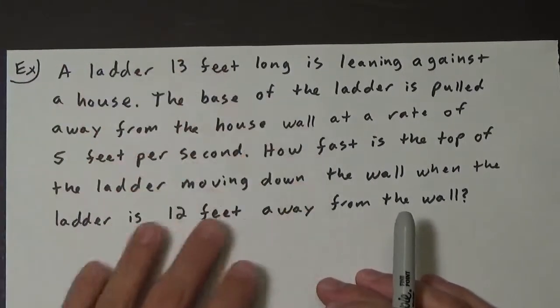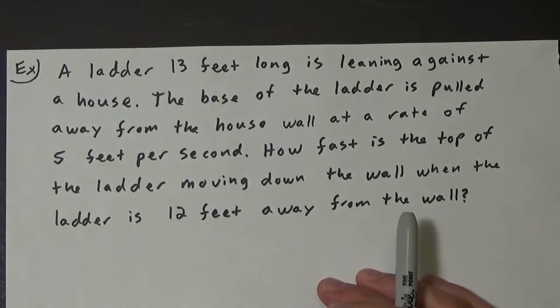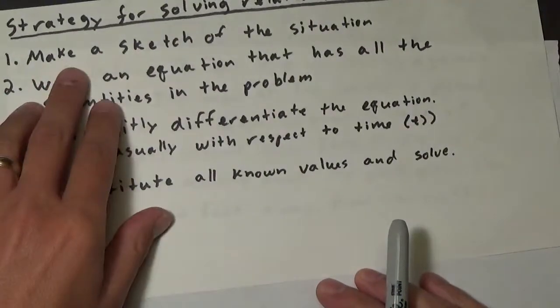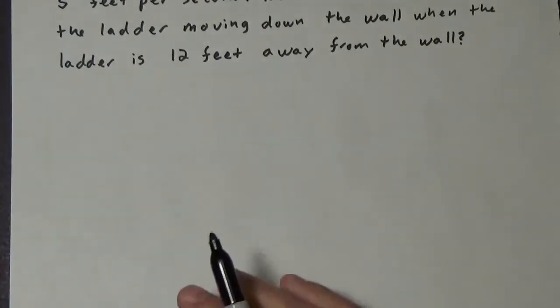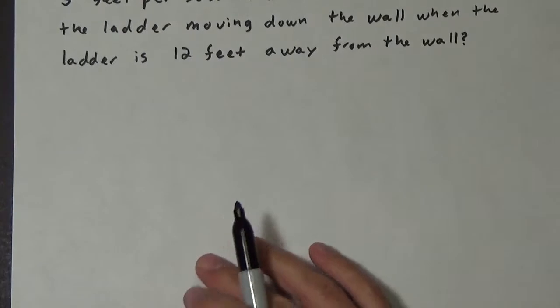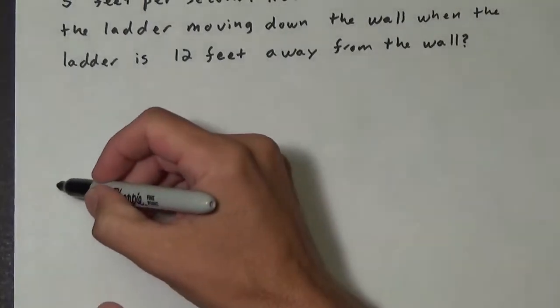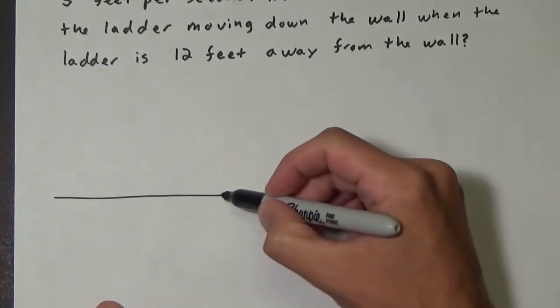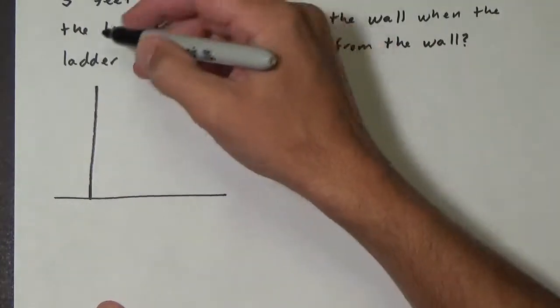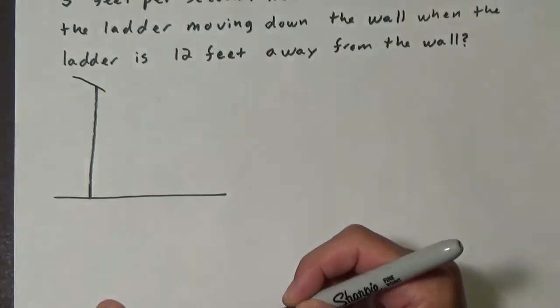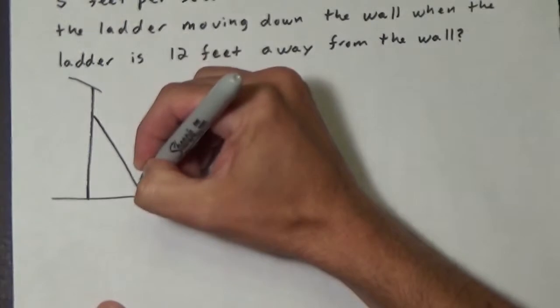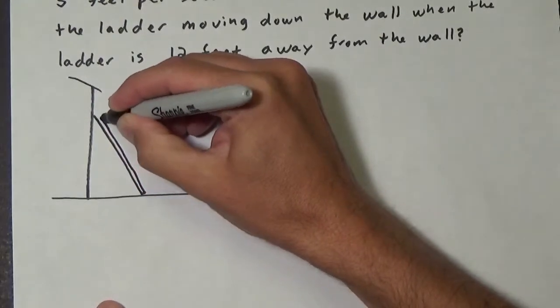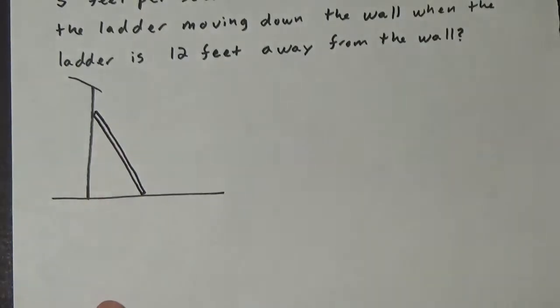Okay, so we have this problem here and it's a related rate of change problem. Let's go through our strategy. Step one is we want to make a sketch of the situation. So this one's not too bad. So here's our house, that's our house, and here's our ladder.